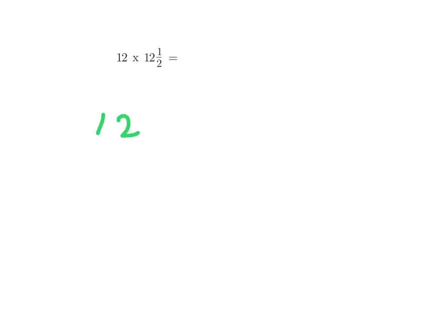12 times, and the 12 and a half, I'd write that as 12 plus one half. Now I'm going to use the distributive property. I'm going to multiply 12 times 12 plus one half.